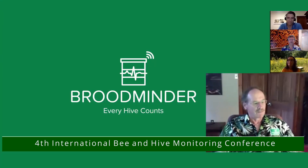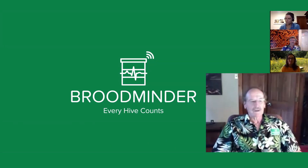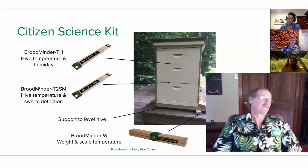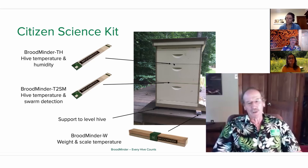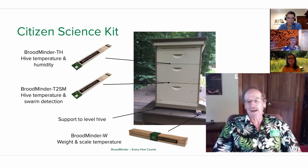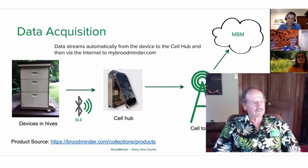Presentation about hive monitoring in general and the T2 in particular. We do the instrumentation with typically three devices per hive: a temperature and humidity device above the upper brood box, a scale under the hive. We transmit the data from the hive via BLE to a hub, then from the hub to a cell tower and to the BroodMinder database.